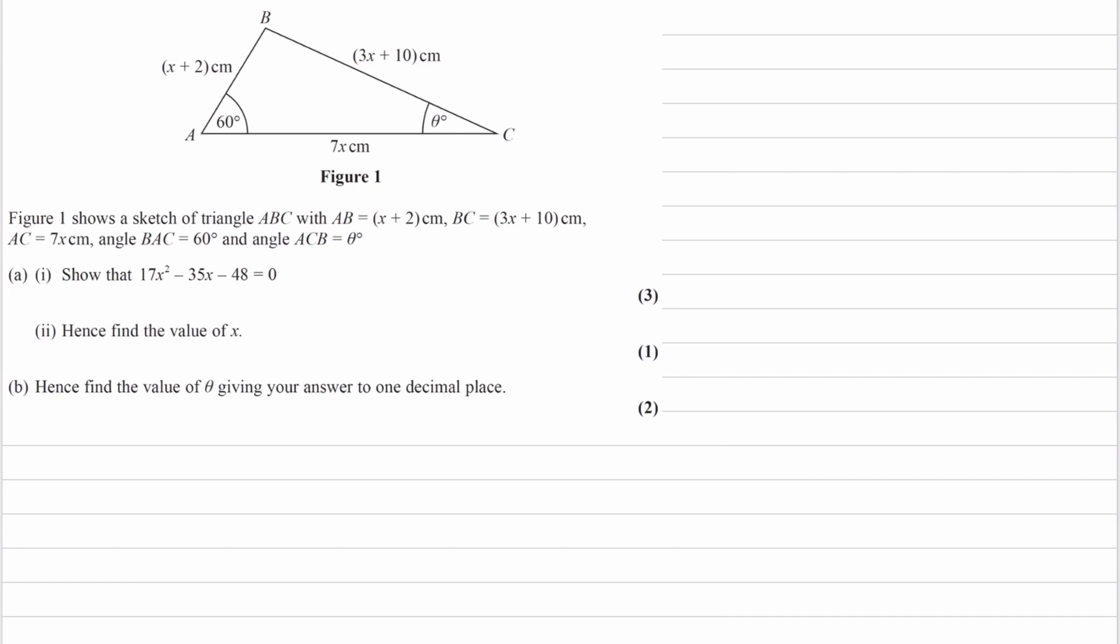So we have two options. We're either going to be using the sine rule, or we're going to be using the cosine rule to be getting some kind of equation that relates these things together. We're not going to be using SOHCAHTOA. We don't know if this is a right-angled triangle, so we can't use SOHCAHTOA.